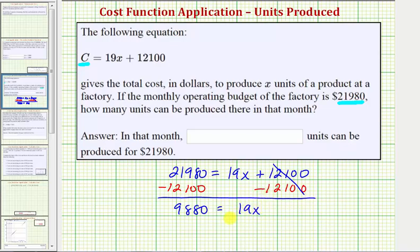Now to solve for x, because 19x means 19 times x, to undo this multiplication, we divide both sides by 19. Notice on the right side of the equation, this would now be one x or just x.